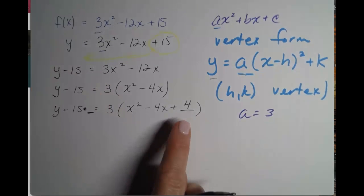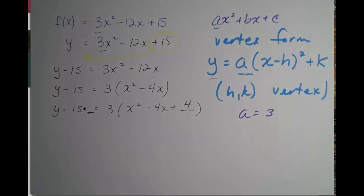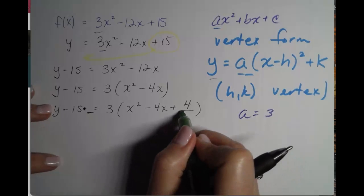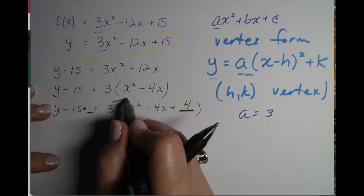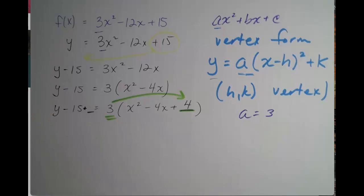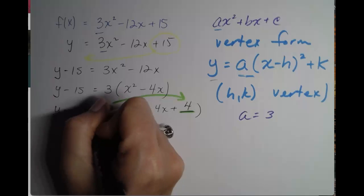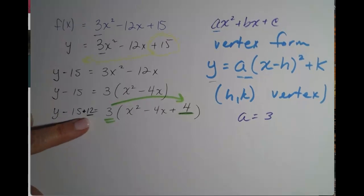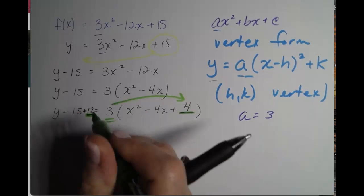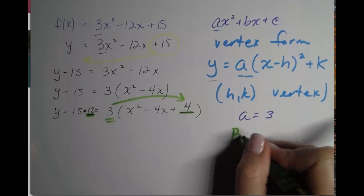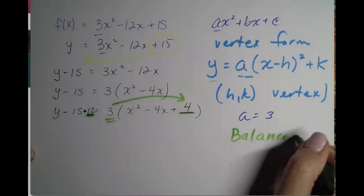But what have we really added to the right hand side? So since this 4 is inside the parentheses, it is under the influence of that 3. So technically, we have not just added 4. We have added 3 times 4, which is 12. So 12 is going to get added to the left hand side. Remember, we want to keep our equation balanced.